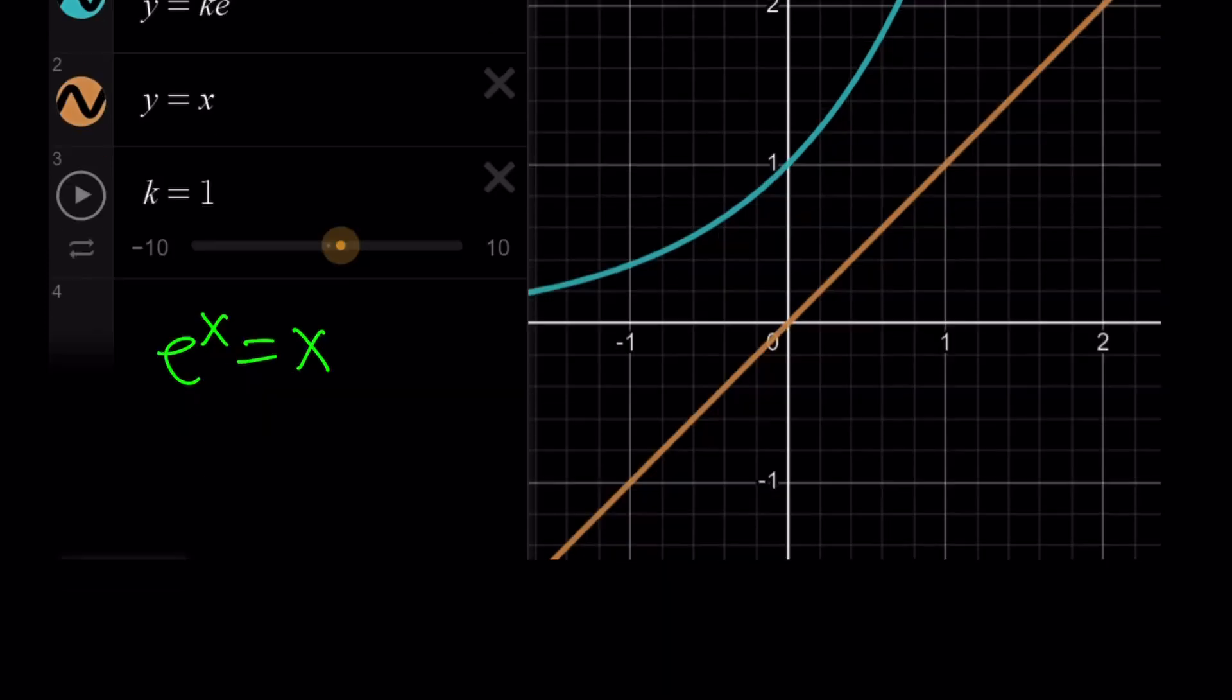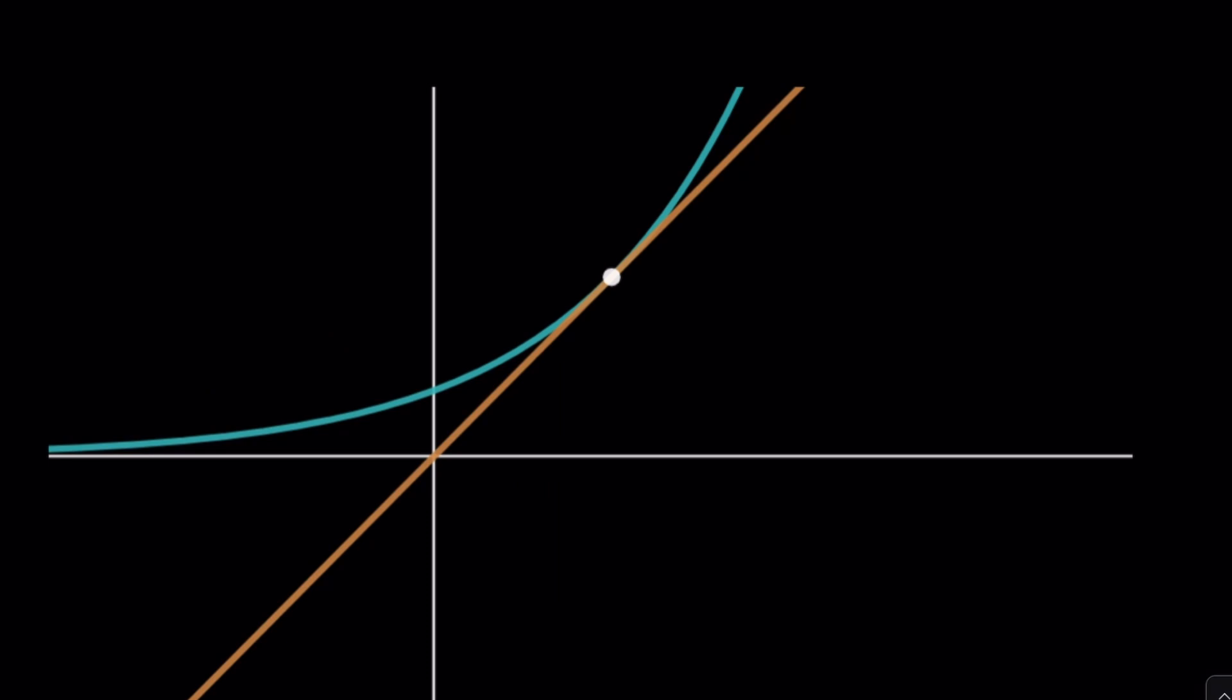So here's what we want. We want them to intersect, but not just intersect. We want them to touch each other at one point so that there's only one solution. Because what happens if they cross each other? Then you're going to have two solutions. That's not something that you want. So how do we achieve this? If two functions are tangent, let's do the following.